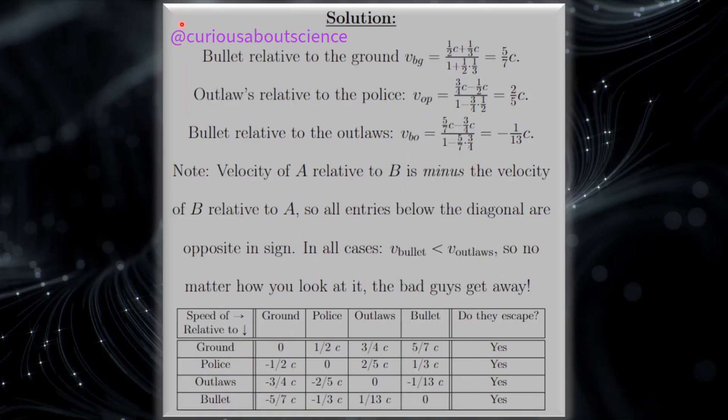All right, so our solution. What we need to do is find what is the bullet relative to the ground. So V bullet relative to ground, knowing that one-half is the speed of the bullet, one-third is the speed relative to the ground. Then we just multiply these through, then we get 5 over 7C.